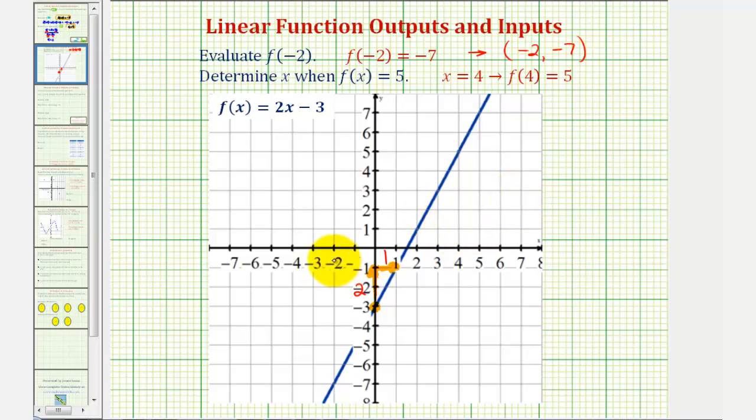Notice on the graph when x is negative two or the input is negative two the output or function value or y value is negative seven, corresponding to the point negative two and negative seven.